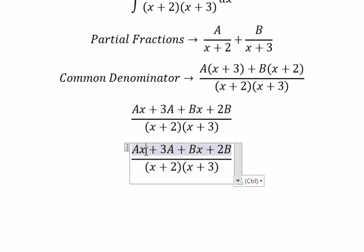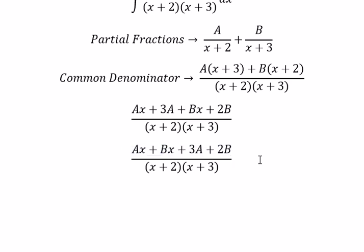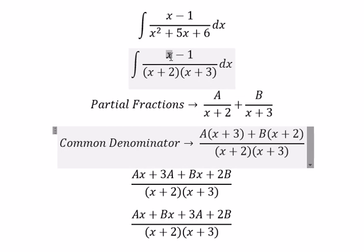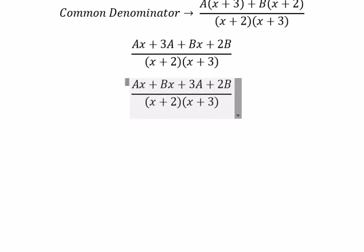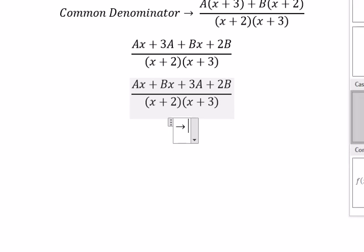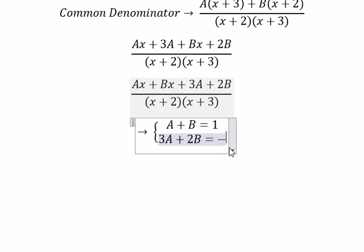So we have Ax plus Bx. We can see that the coefficient of x is 1. So we have A plus B equal to 1. And we have 3A plus 2B equal to negative 1.